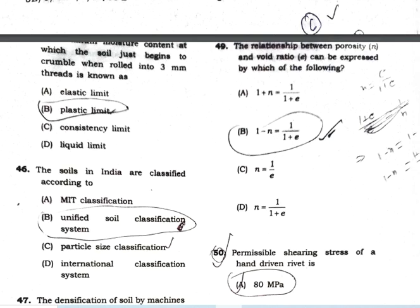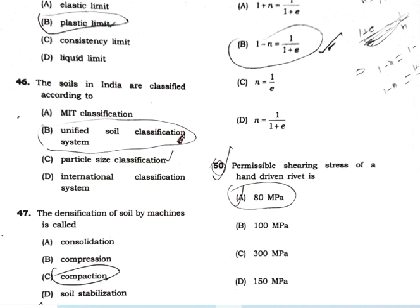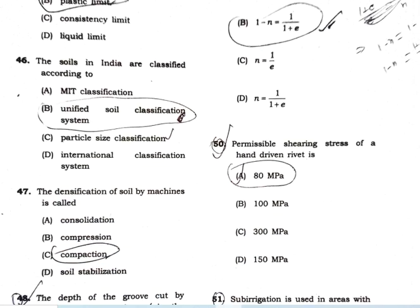Option B is the correct answer for that relationship. The permissible shear stress of a hand-driven rivet is 80 MPa. In the next part, we are moving to question number 51.